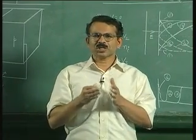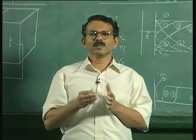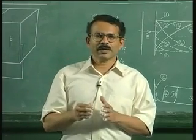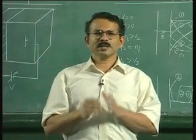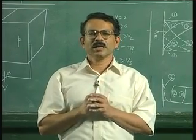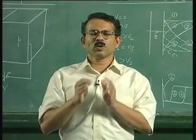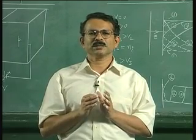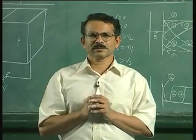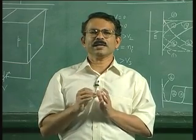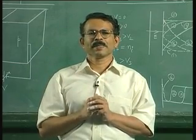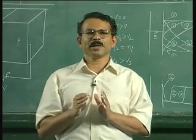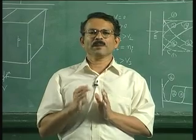In this class, we have considered the MOS capacitor structure and set our goal as explaining the capacitance-voltage characteristics for different frequencies. We started with an ideal MOS capacitor and explained the accumulation, depletion, and inversion regions of operation when you apply a DC voltage. More about the inversion region and charge conditions will be covered in the next class.